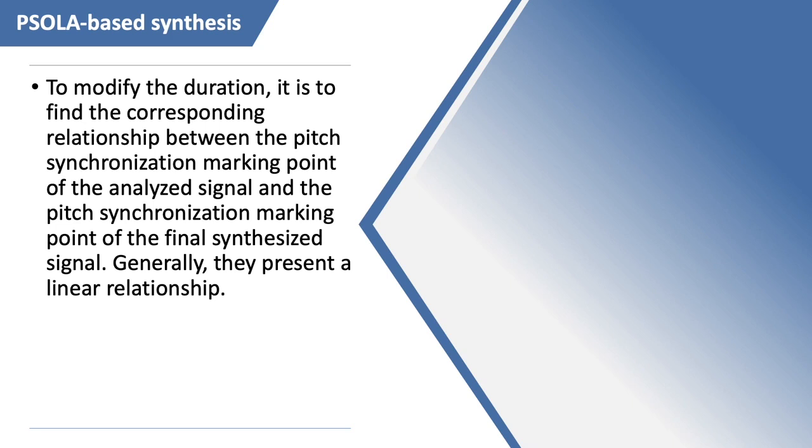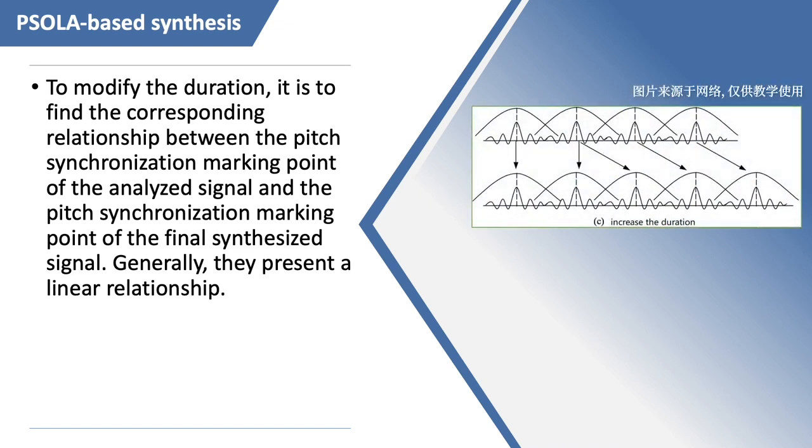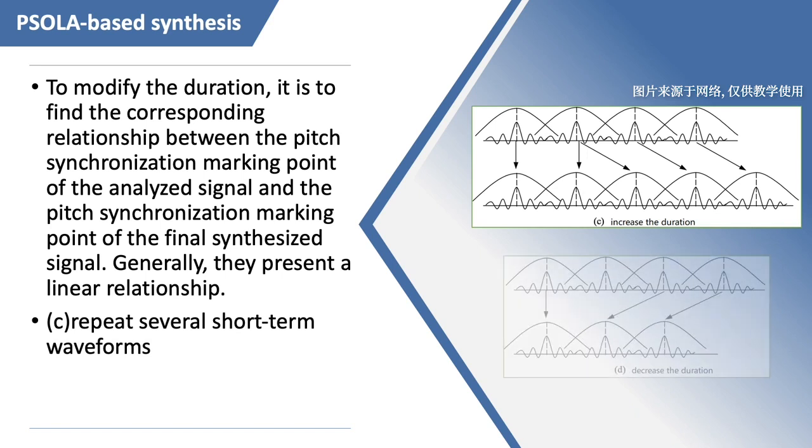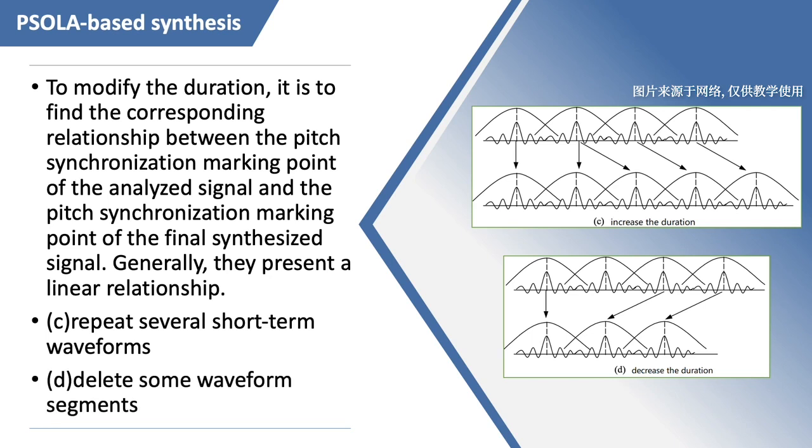To modify the duration, it is to find the corresponding relationship between the pitch synchronization marking point of the analyzed signal and the final synthesized signal. Generally, they present a linear relationship. As shown in the figure, increasing the duration, that is slowing down the speech rate, is the repetition of several short-term analysis signals, while reducing the duration, that is increasing the speech rate, is to delay some waveform segments in the short-term signal.